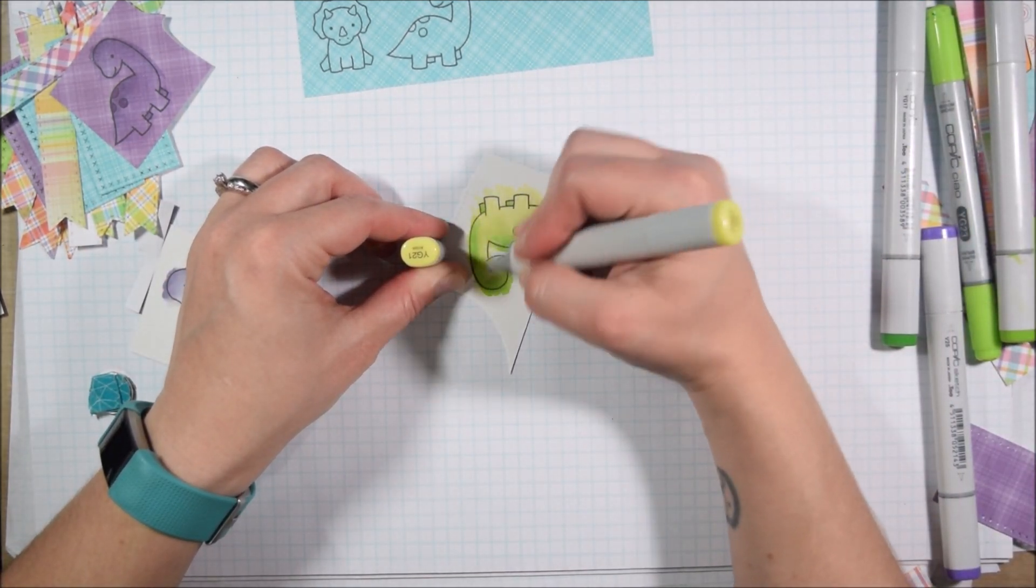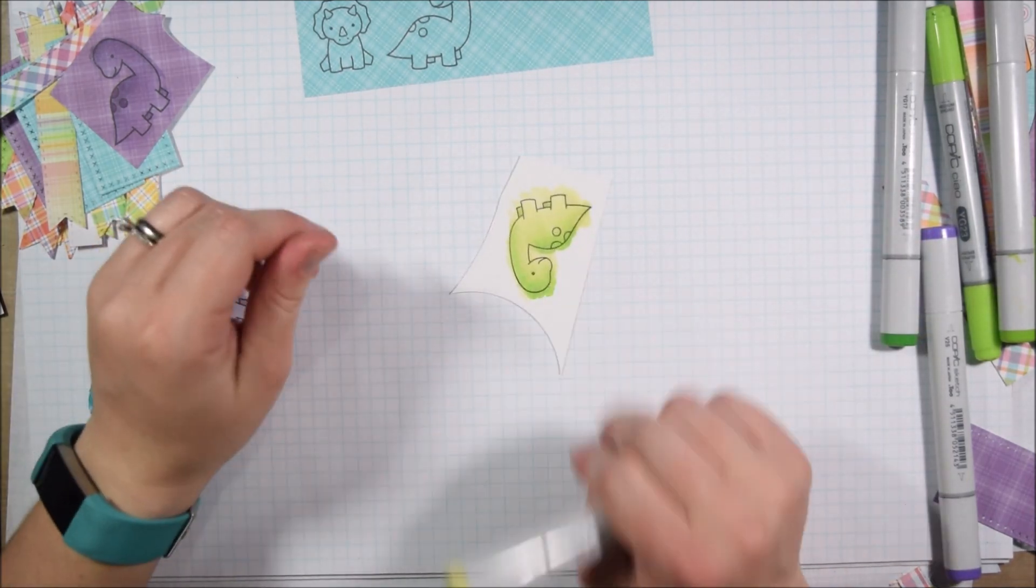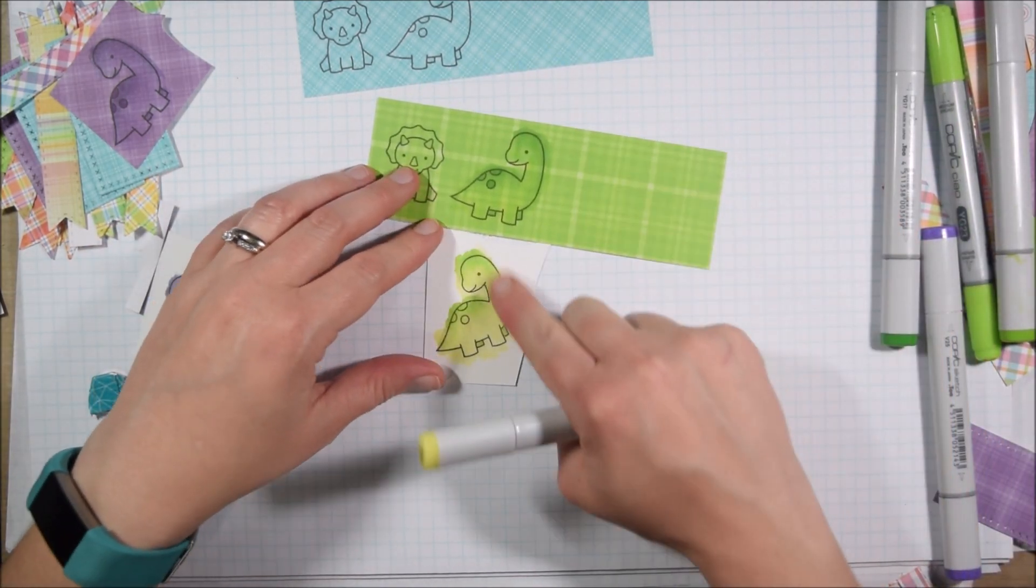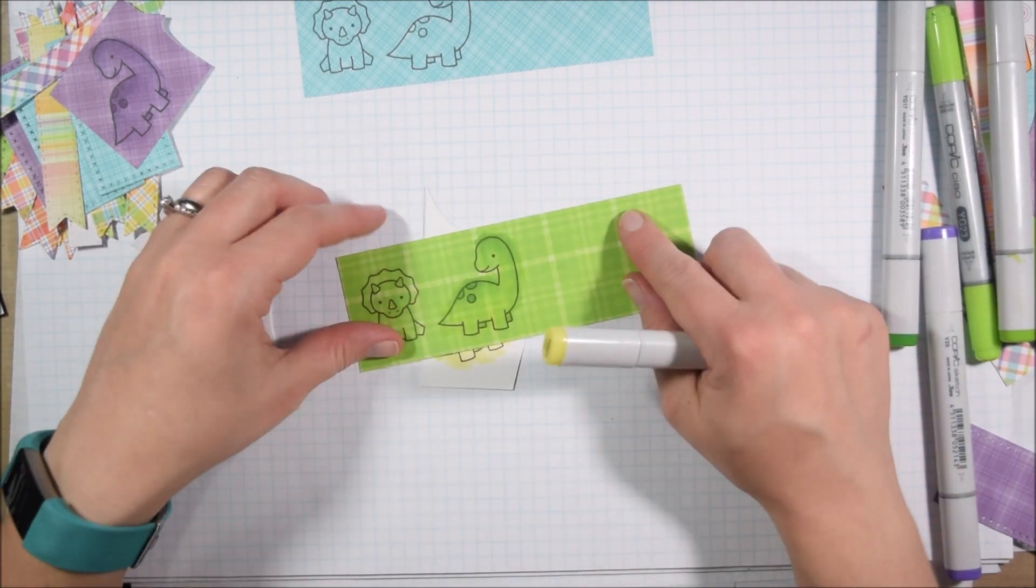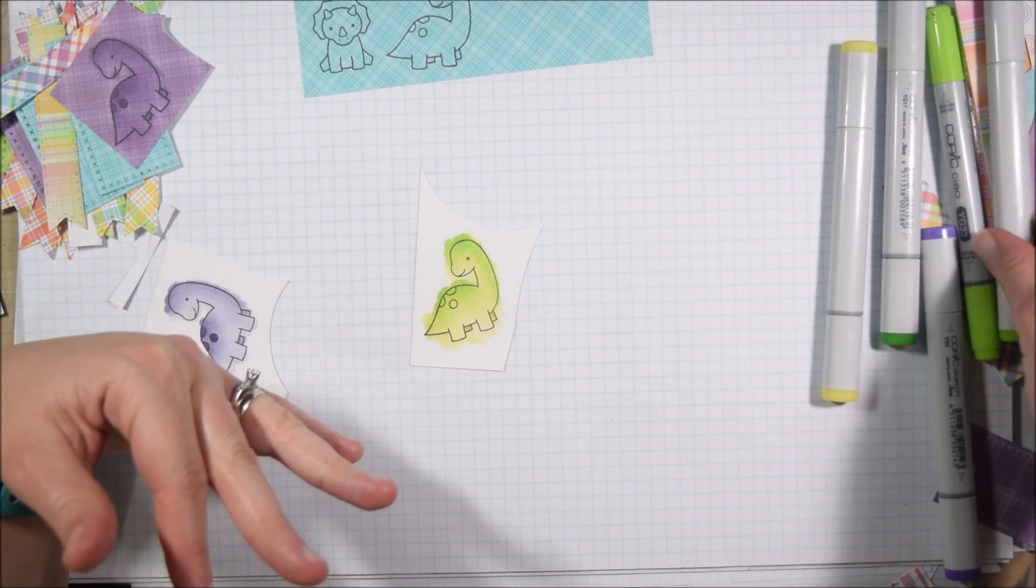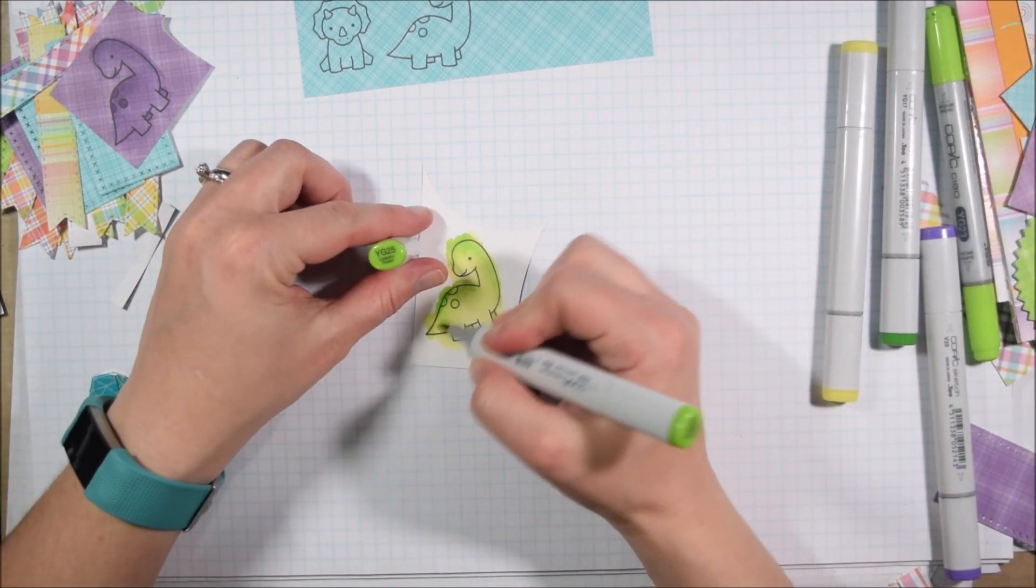When I tried to color just as quickly with the Copics, the dinosaur wound up really blotchy on the white paper. It wasn't as smooth, and I am using Michael's Recollections cardstock because that's my preferred Copic coloring cardstock.